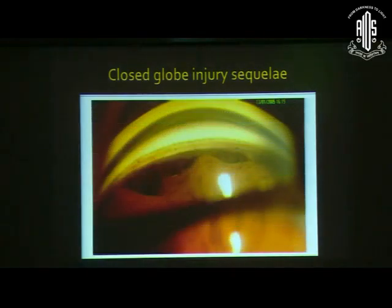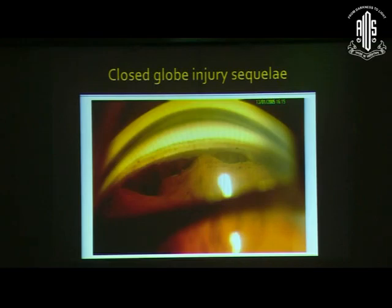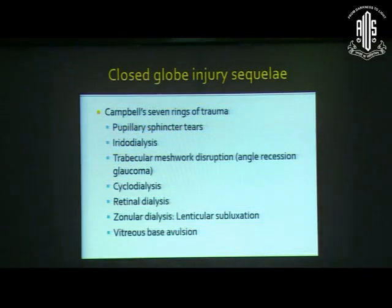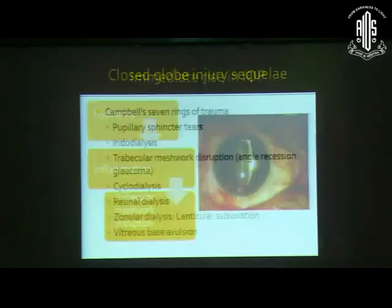Then we see cyclodialysis, in which there is a white, gray, or black band between the trabecular meshwork and the root of the iris. This image shows iridodialysis as well as cyclodialysis coexisting. Beyond that, we may have retinal dialysis, zonular dialysis — which produces lenticular subluxation — and vitreous base avulsion.